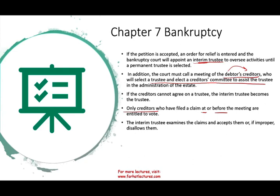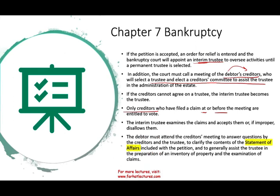The interim trustee examines the claims and accepts them; if a claim is improper or not legitimate, they will dismiss it. The debtor must attend the creditors' meeting because the debtor knows about their business — they need to answer questions by the creditors and the trustee to clarify the content of the statement of affairs, which we'll look at later. Basically, it shows your assets and liabilities at fair market value, and includes questionnaires about additional information to assist the trustee in the preparation of an inventory of property and examination of claims. As a debtor, you are giving up your business activities to a trustee, so it is reasonable that you are expected to assist the trustee.